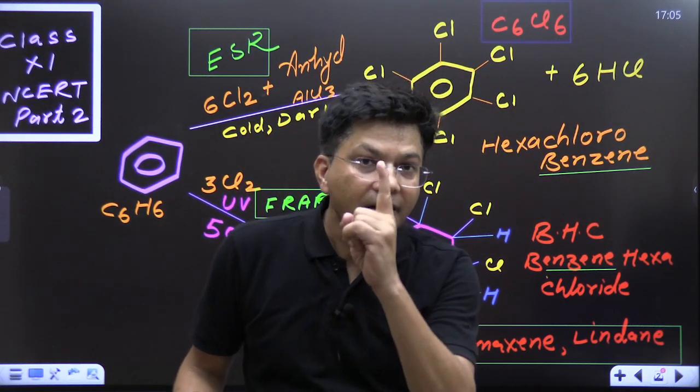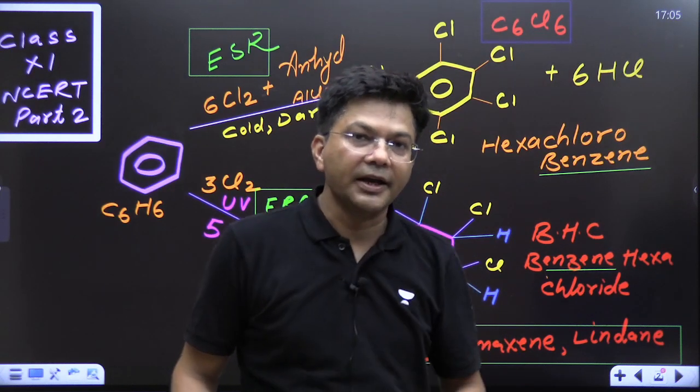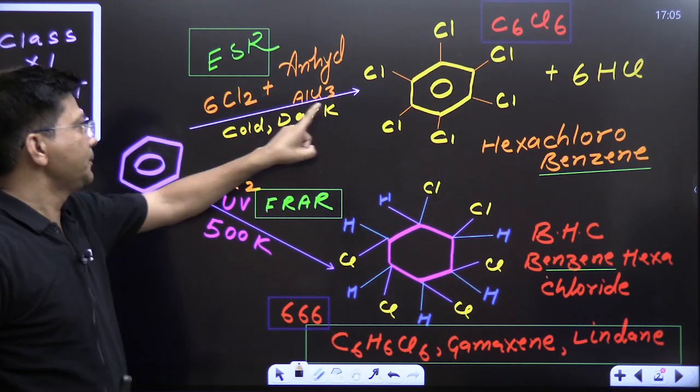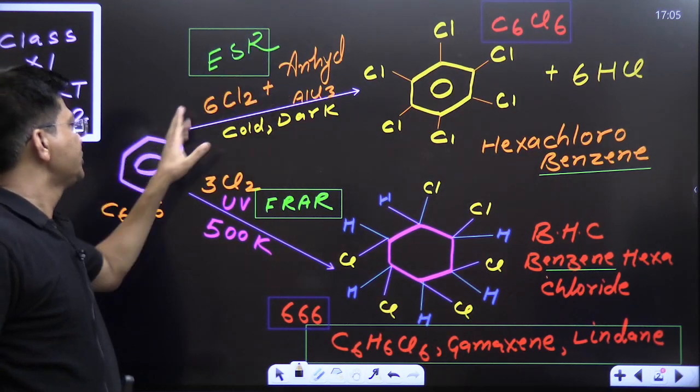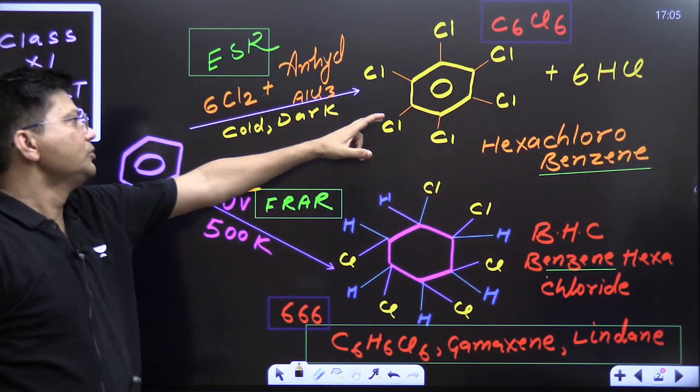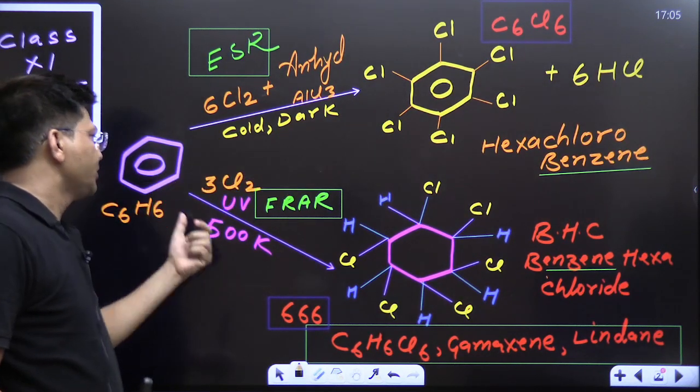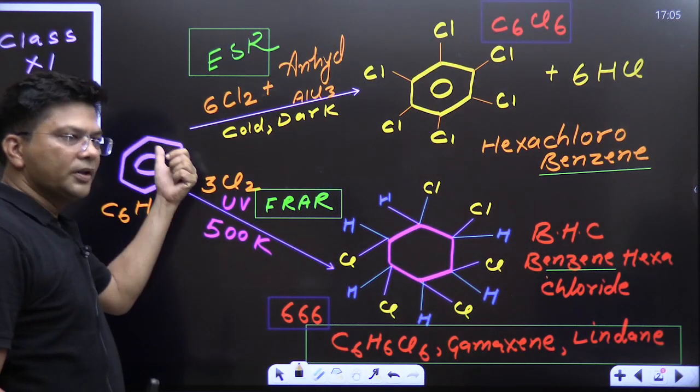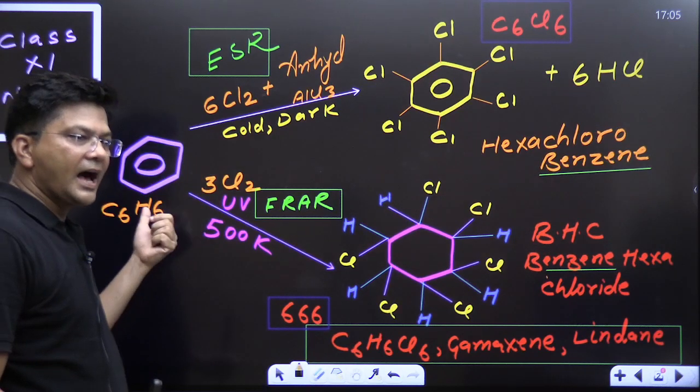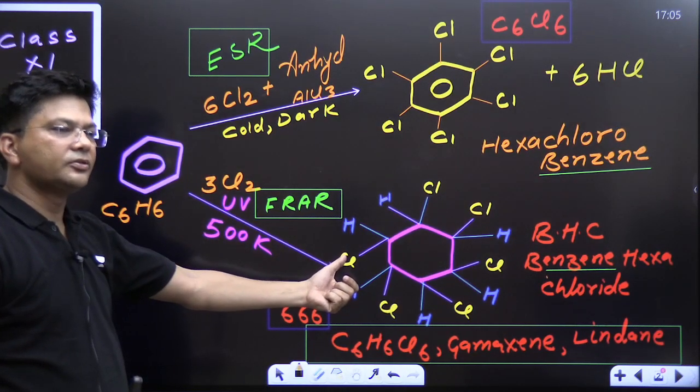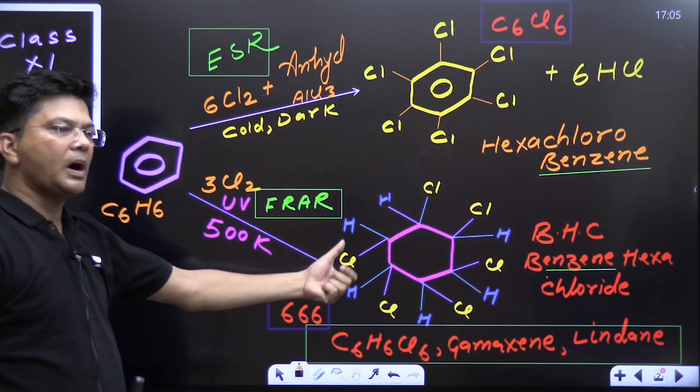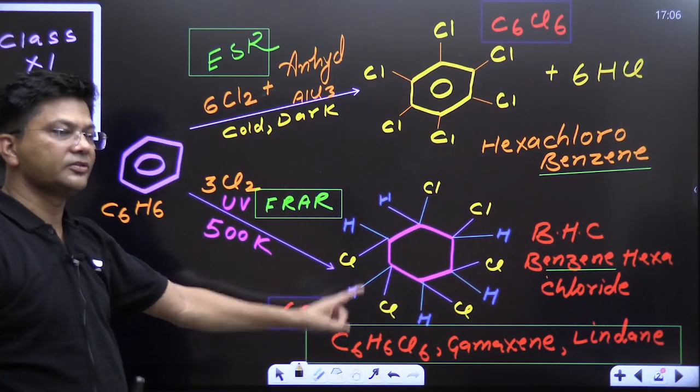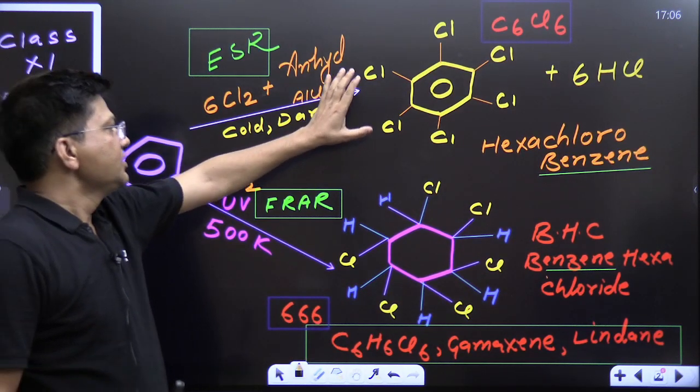Yes, remember that why I'm telling you again and again here addition has taken place. There substitution has taken place during electrophilic substitution. Reaction benzene is not going to lose its aromaticity, but during addition here, the reaction is taking place on the basis of pi electrons. Pi bond has broken and pi bond has changed into sigma bonds. So, this is benzene hexachloride. Do remember C6H6Cl6 and that is simply C6Cl6.